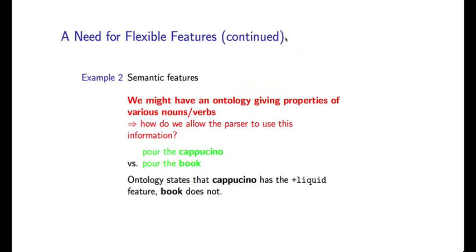Here's a second example of the kind of features which might be useful but which are, again, rather difficult to incorporate within a history-based model such as a probabilistic context-free grammar. These are semantic features. So imagine we have an ontology or some kind of lexicon which gives properties of different nouns and verbs. So one example of such an ontology might be a resource called WordNet, which is a very famous resource that has information about a very large category of nouns and verbs in English.